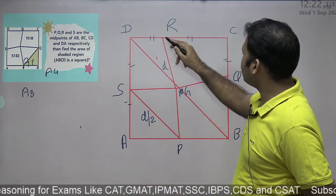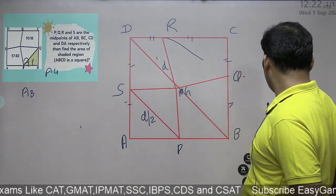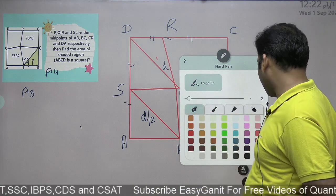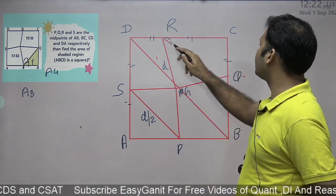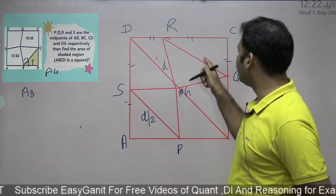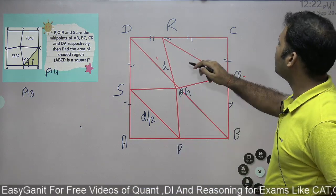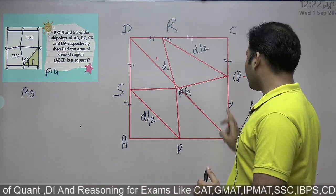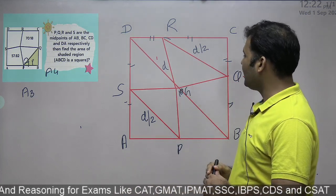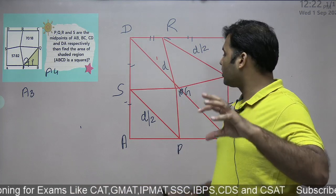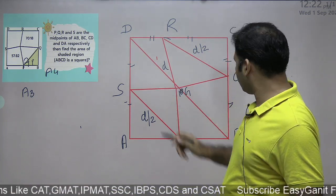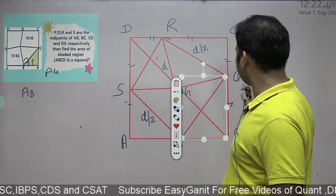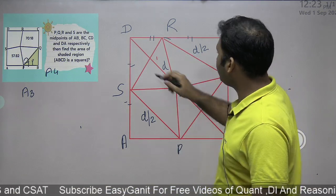Similarly, when I join point R and point Q, can I also say that this length RQ will also be half of the diagonal? So this will also be d/2. I'm applying the midpoint theorem in this triangle as well. Both diagonals of a square are equal in length — that's a standard rule. So the length of the other two sides of the inner figure will also each be d/2. So you can see I'm making a figure inside where all four side lengths are equal.